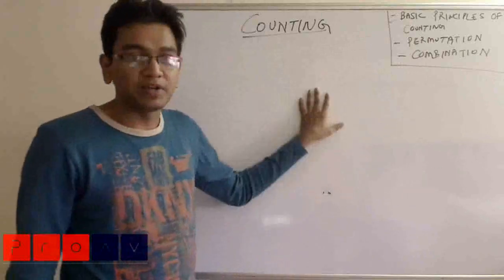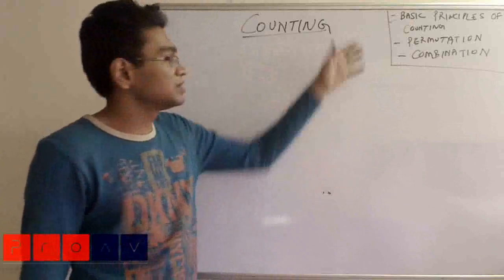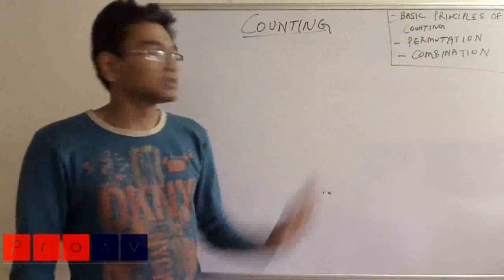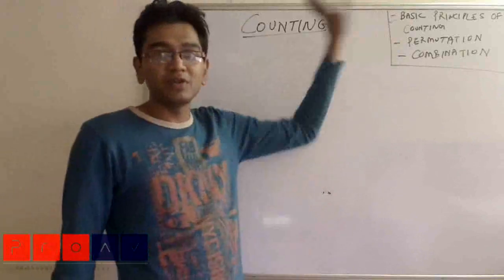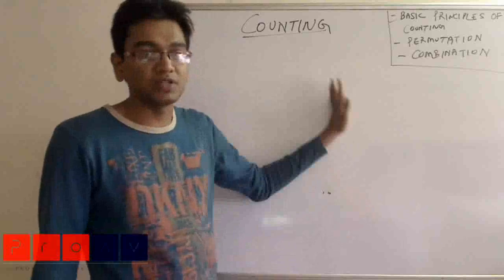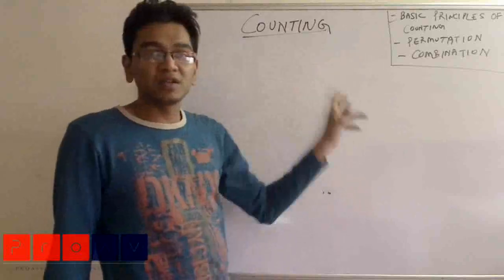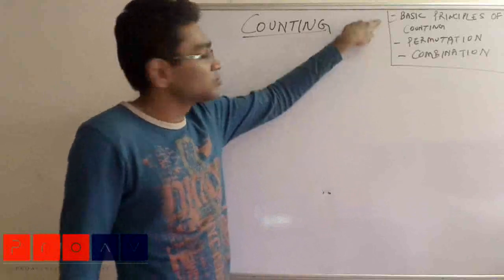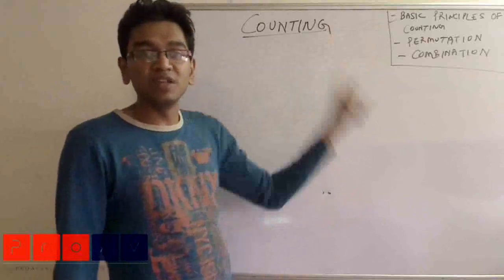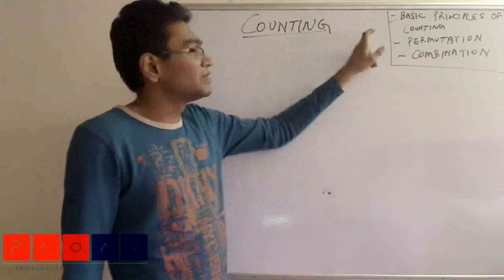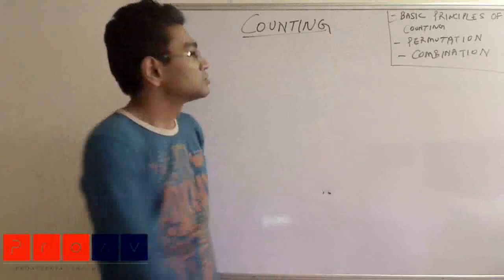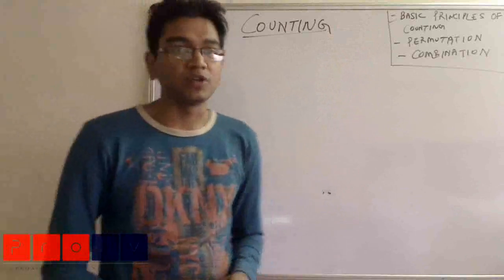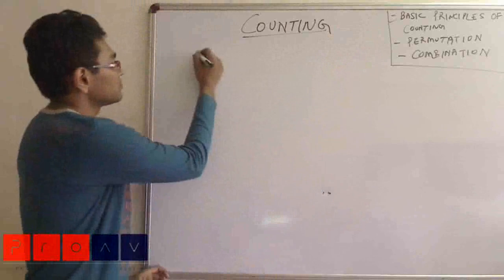We will be stressing on what the concepts are and how to make use of those concepts. Remember, we are going to start with the basic principles of counting — believe me, the entire chapter of counting, probability, permutation, and combination is derived on the basis of this. Once you get this correctly, the entire chapter follows. Once you understand this clearly, you have all the power.